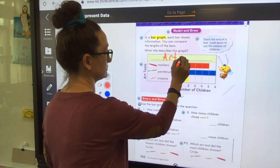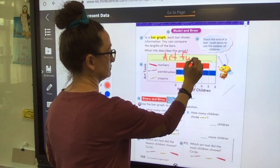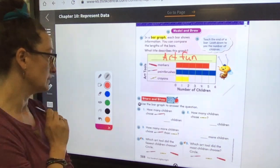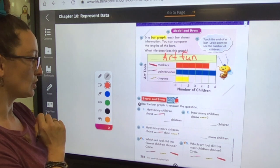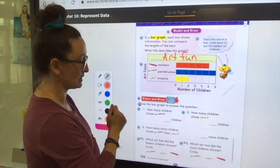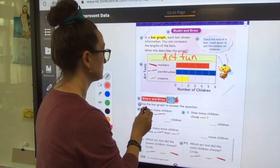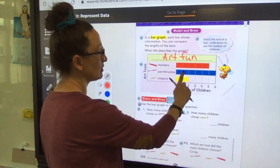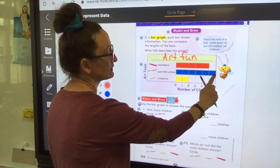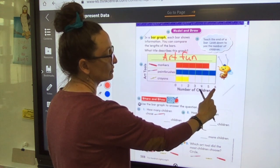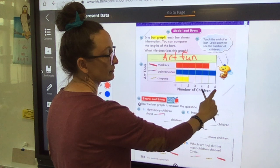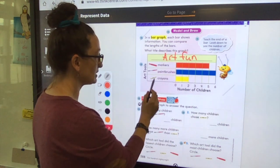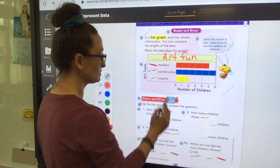Okay, so let's look at number one. How many children chose, and it's got a picture of a what? Paintbrush. So I'm going to go up here to paintbrushes and I'm going to follow it all the way until the blue stops. Okay, I see it stops, and then go down. What do you see? What number? Six. I see a number six. So that's how many kids or children chose paintbrushes, so I'm going to put a six right there.